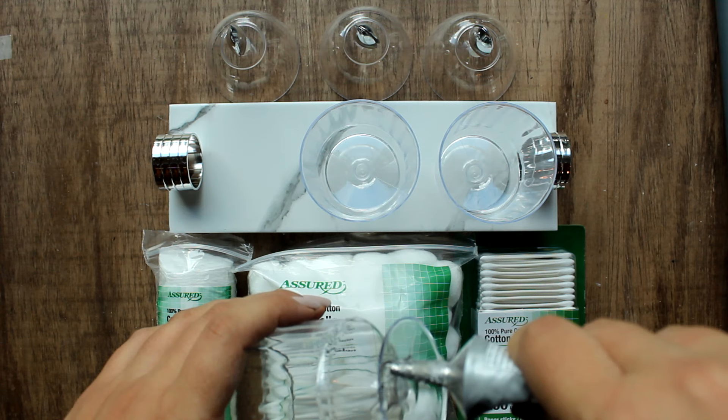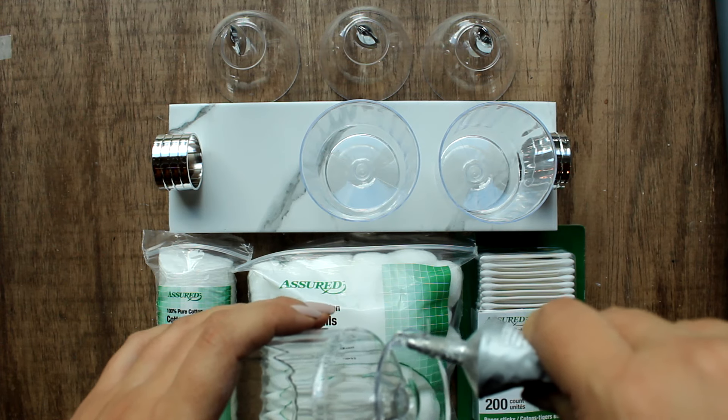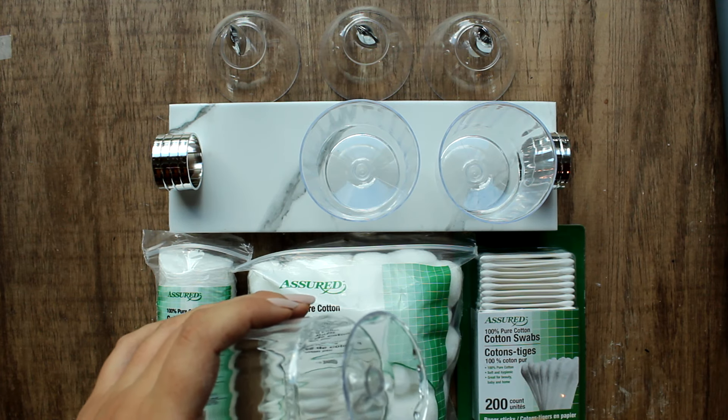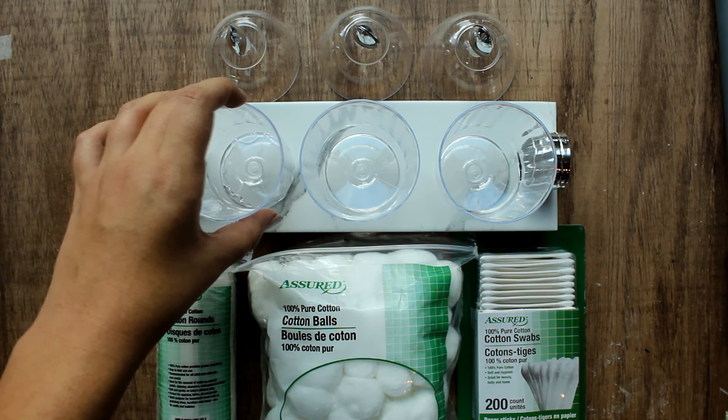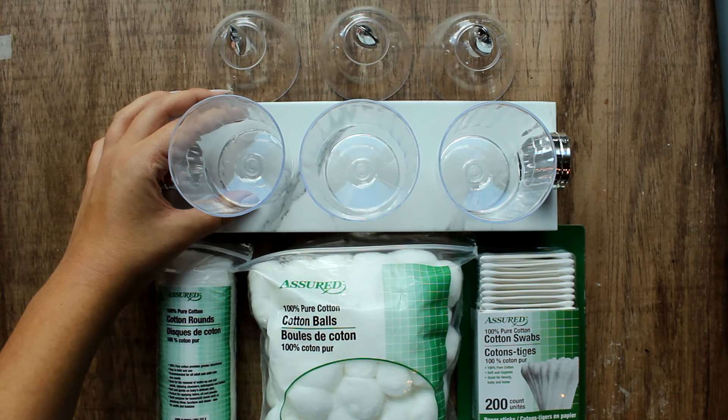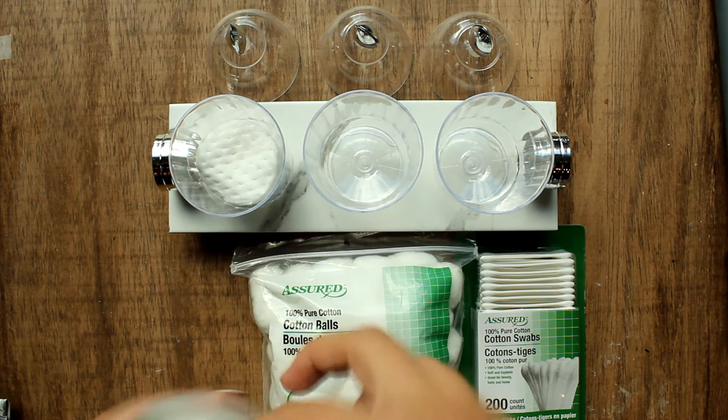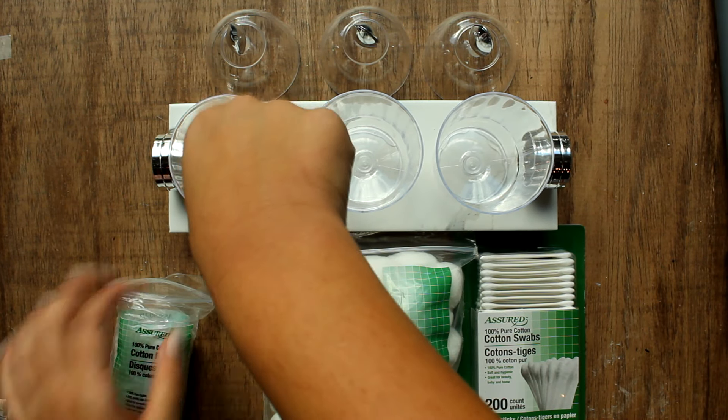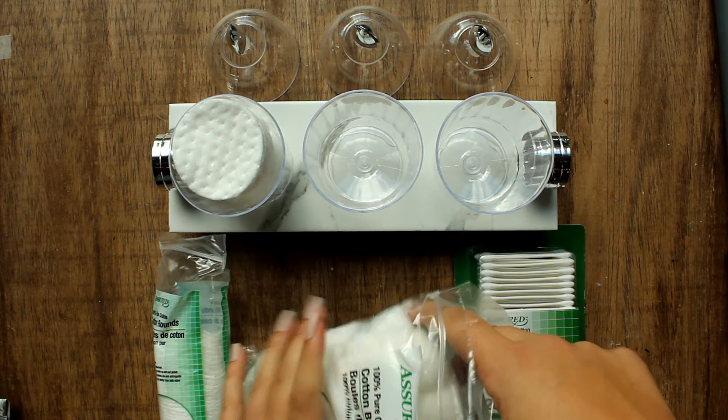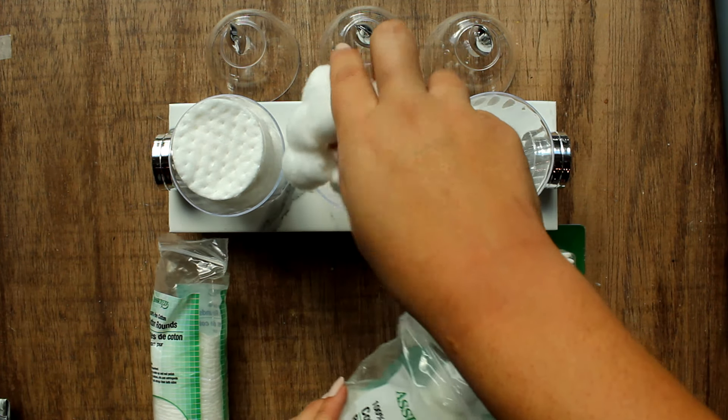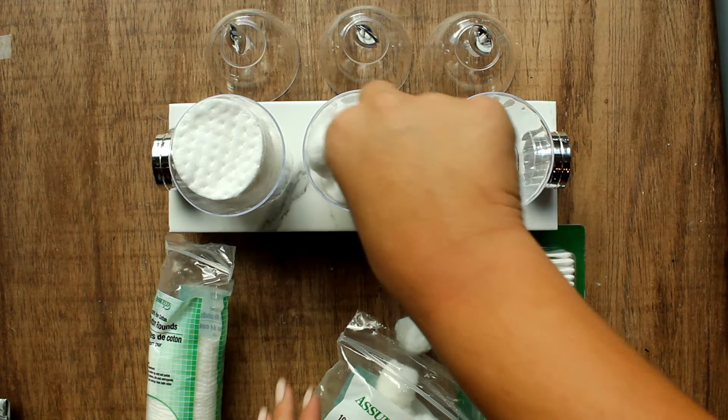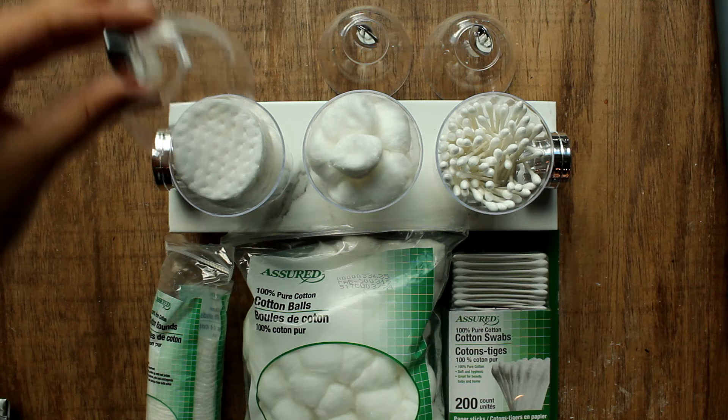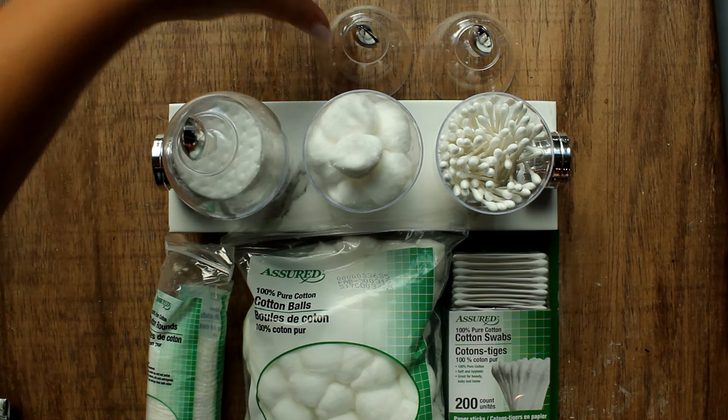Next I glued the glasses to the tile and then filled them with cotton balls, cotton rounds, and q-tips. A little piece of advice for this would be to probably glue the two outside glasses to the tile first and then glue the middle so that you know it's lined up exactly in the middle. After they're all filled, I just popped on the tops and you can see how cute they look all together.